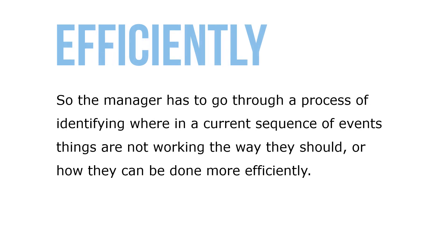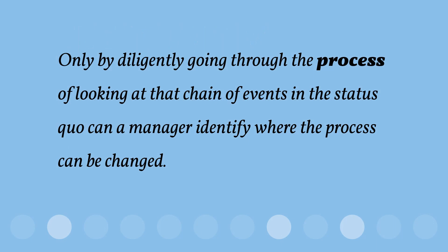The manager has to go through a process of identifying where in a current sequence of events things are not working the way they should, or how they can be done more effectively. Only by diligently going through the process of looking at a chain of events in the status quo can a manager identify where the process can be changed.